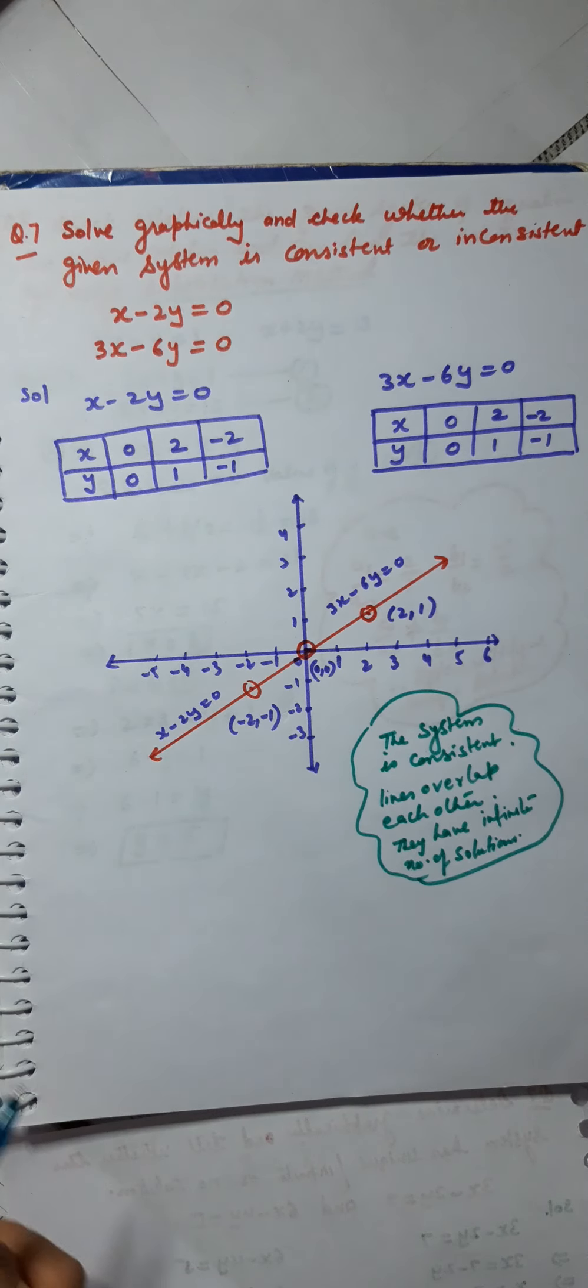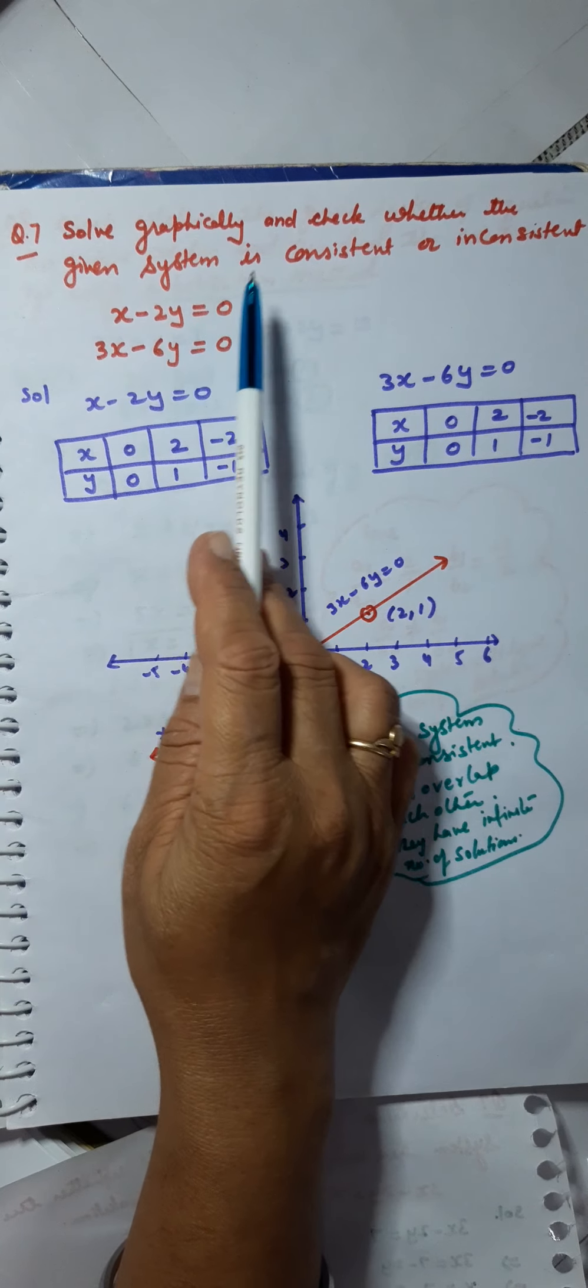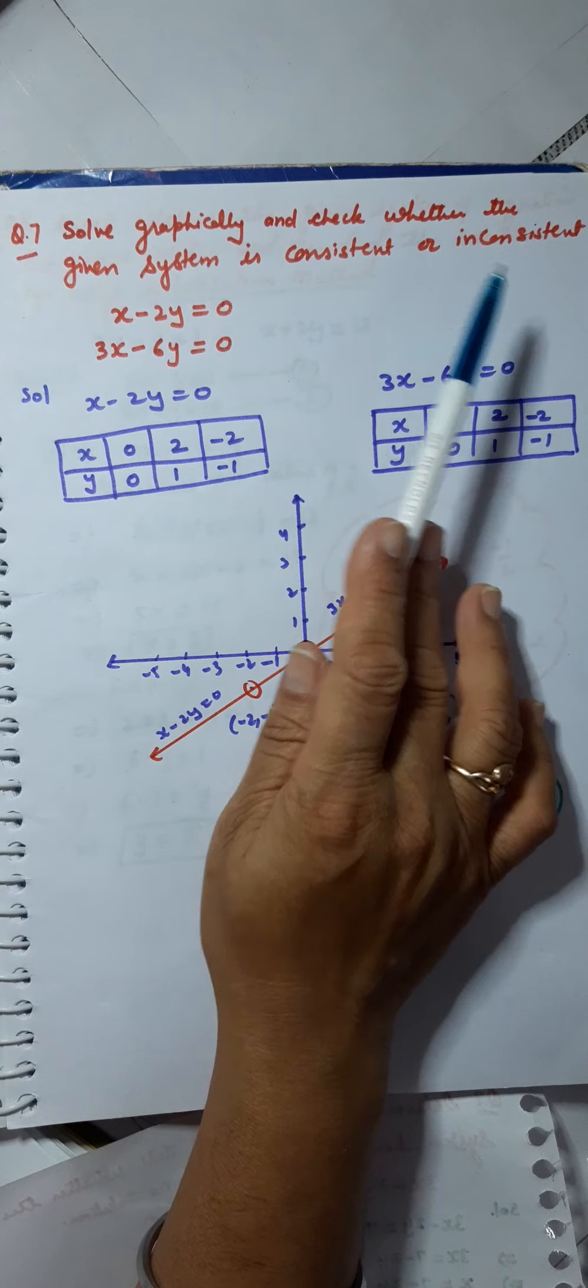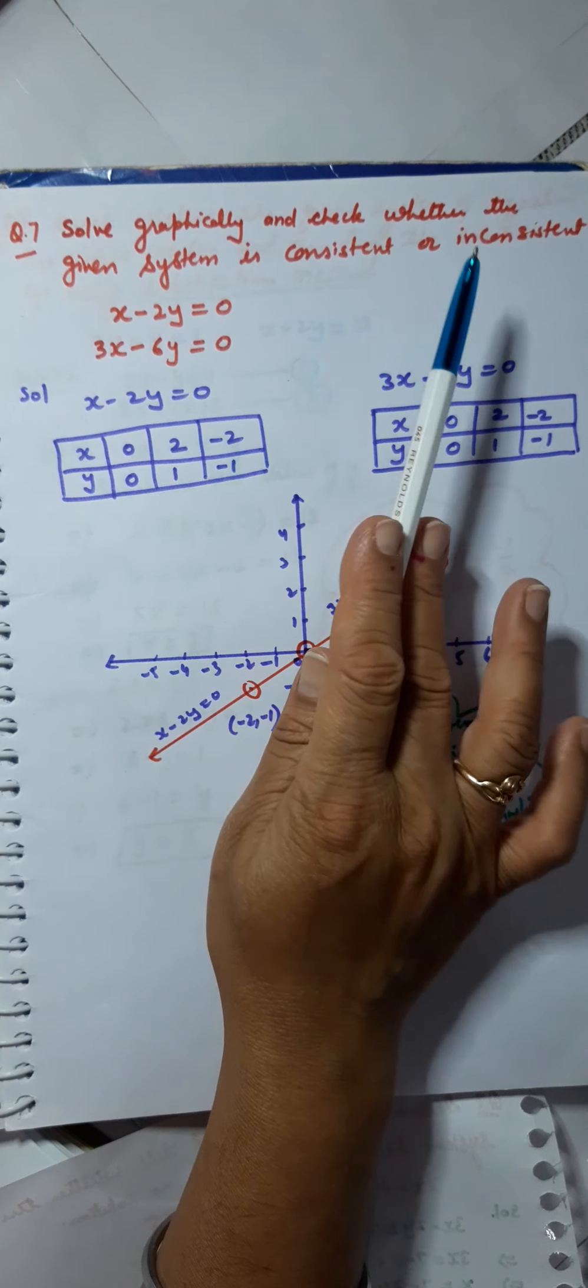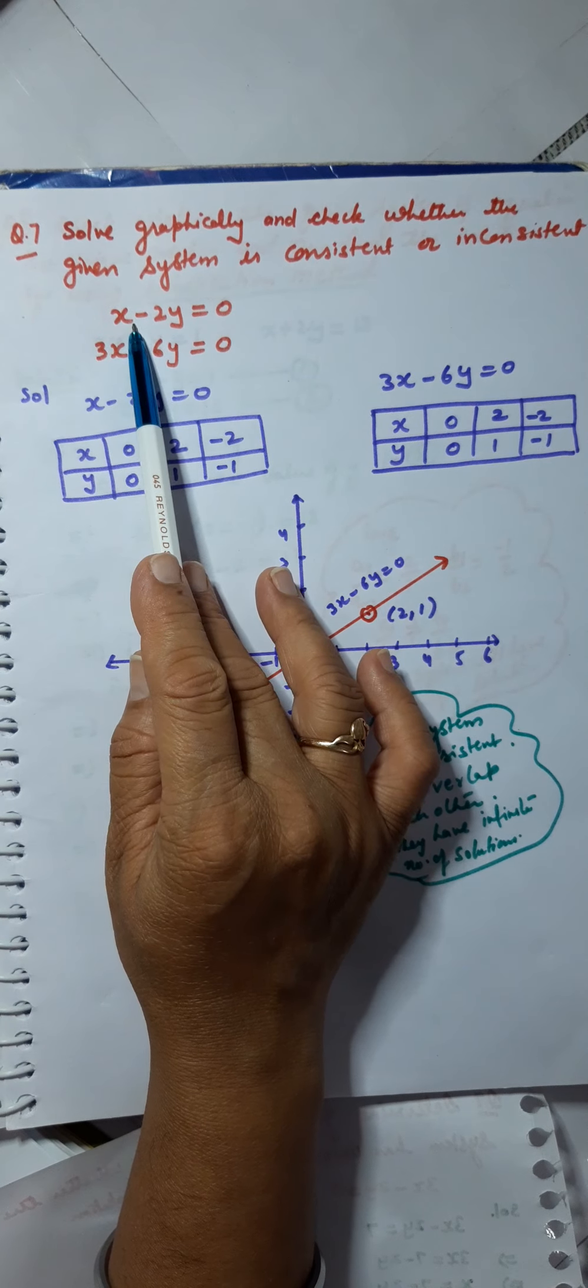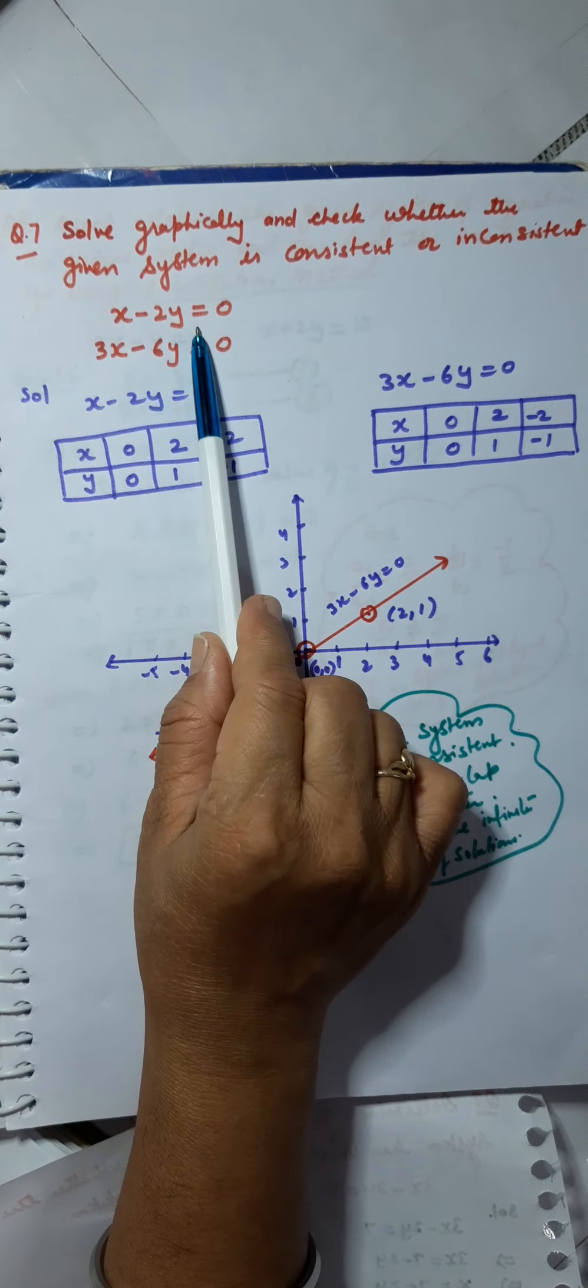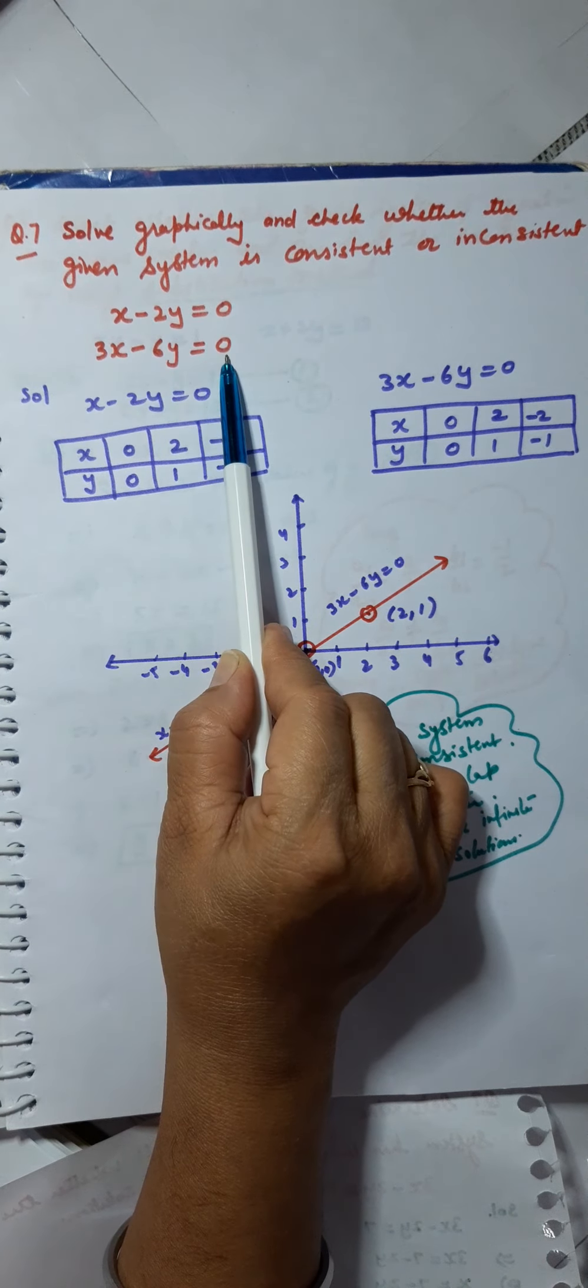Next equation that I have taken: solve graphically and check whether the given system is consistent or inconsistent. Let us revise. Consistent means it has a solution. Inconsistent means no solution. So the set of equations now taken is x minus 2y equals 0 and 3x minus 6y equals 0.